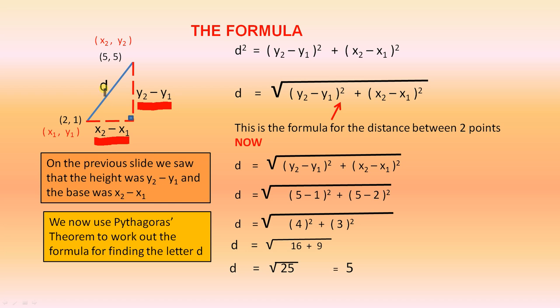And d is the distance we have to find. We now use Pythagoras' theorem to work out the formula for finding the letter d. So Pythagoras' theorem tells us that the square on the hypotenuse equals the sum of the squares on the other two sides. If we find the square root of both sides, we get d equals the square root of (y₂ minus y₁) all squared, plus (x₂ minus x₁) all squared. And this is the formula for the distance between two points.